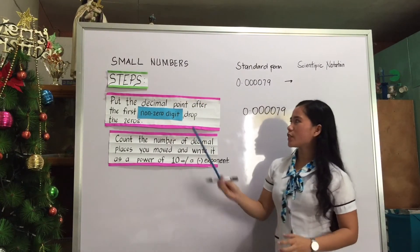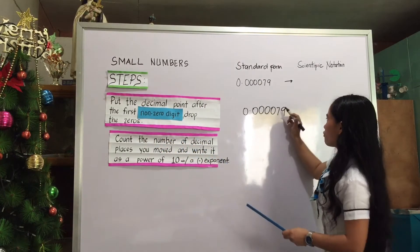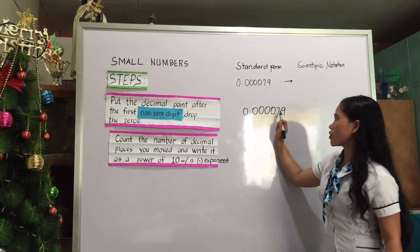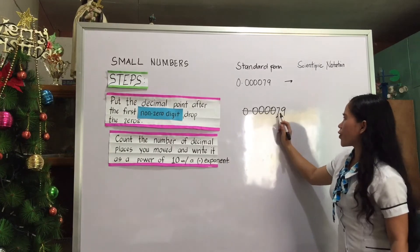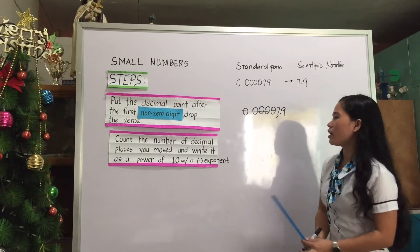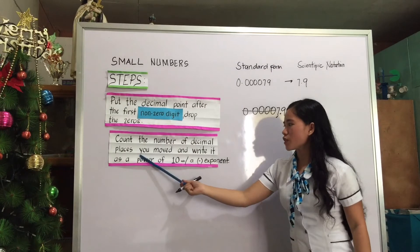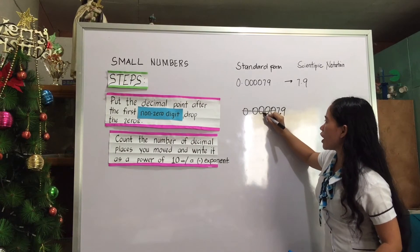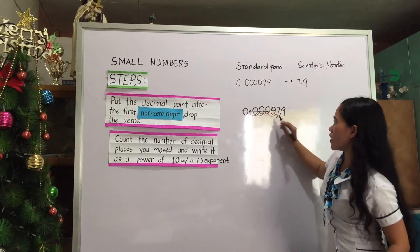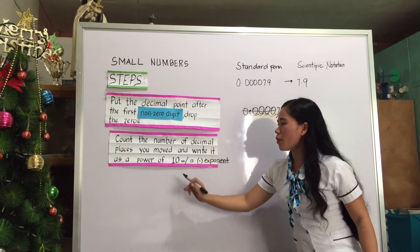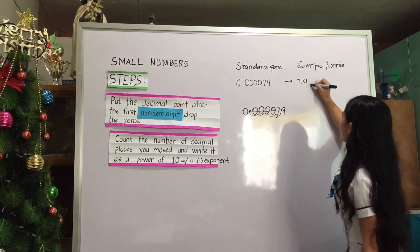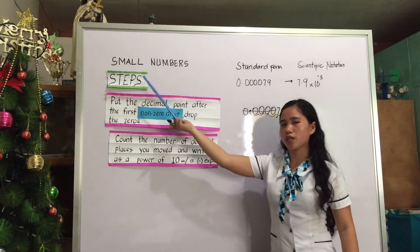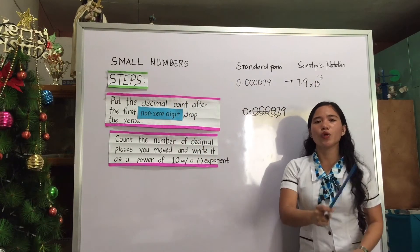Now let's proceed to small numbers. Step one: put the decimal point after the first non-zero digit — the first non-zero digit here is 7, so the decimal goes here — and drop the zeros. The remaining will be 7.9. For step two, count the decimal places you move. From here we move the decimal point to the left: 1, 2, 3, 4, 5. Write it as a power of 10 with a negative exponent — times 10 to the power of negative 5. We use negative exponents since we are working with small numbers.